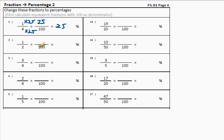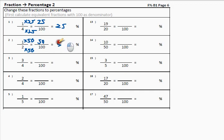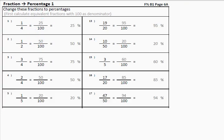Two times what gives us a hundred? Yes, times fifty. So we times by fifty at the top: one times fifty is fifty. In other words, fifty percent — that is why. Okay, it's your turn. Please pause the video and do the rest. Now, there you go — there's your answers. Please check them. Did you use twenty times five here?